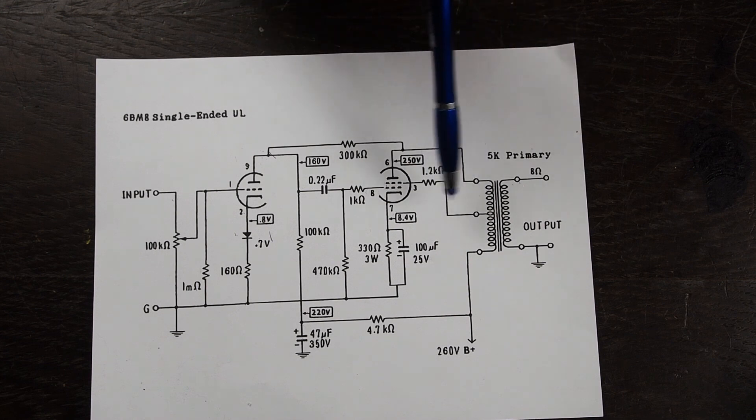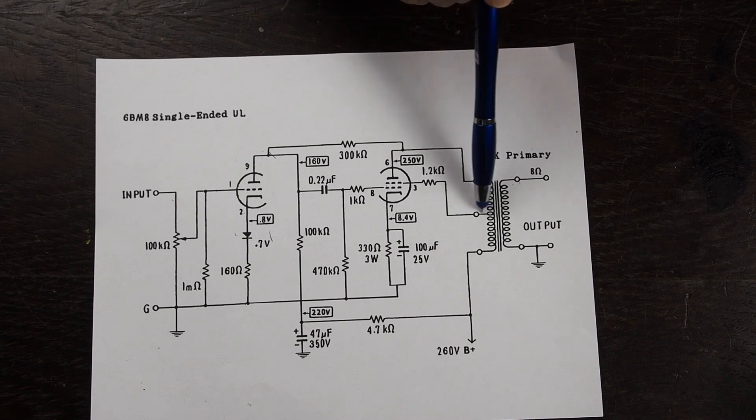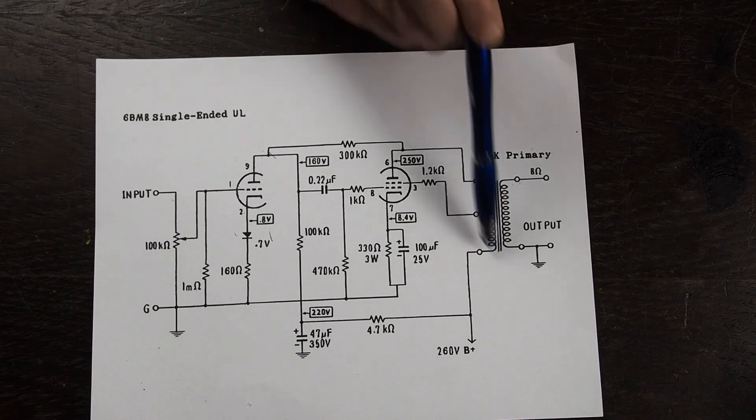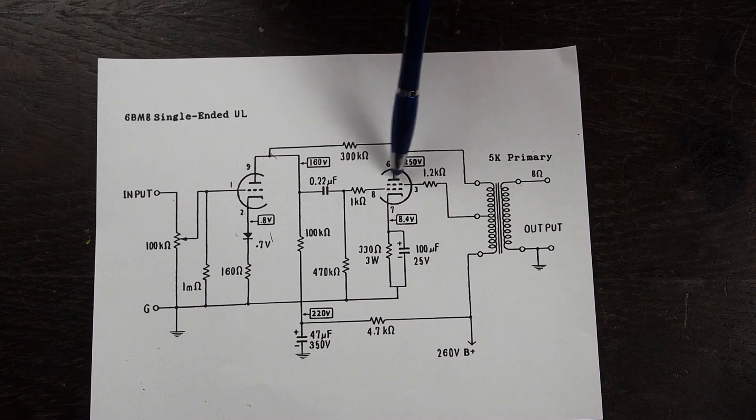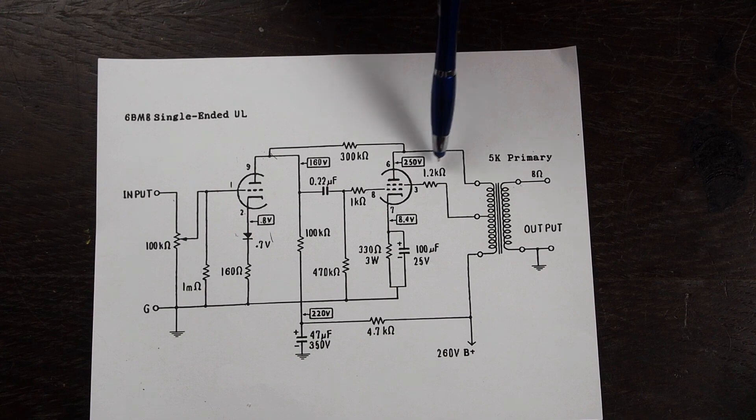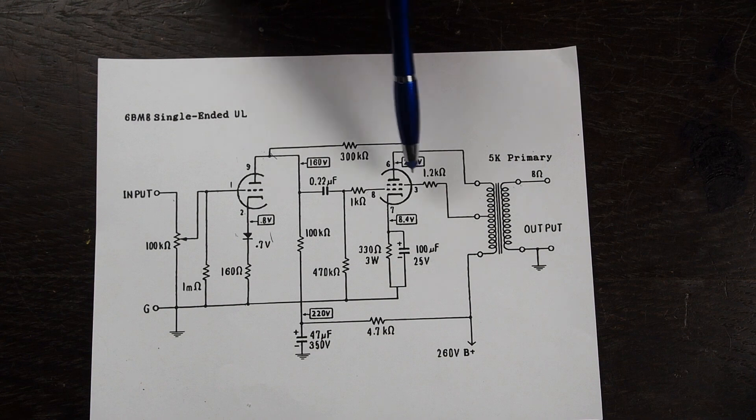The design we're going to be using in this amp is called an ultralinear and it gets that name from using a center tap off of the primary of the output transformer which is usually around 40 to 43 percent across this primary coil and it goes to the screen of this tube through this 1.2k ohm resistor.